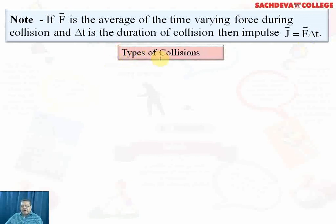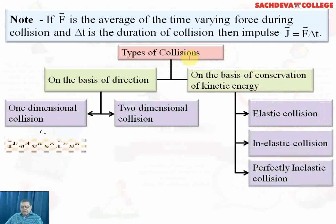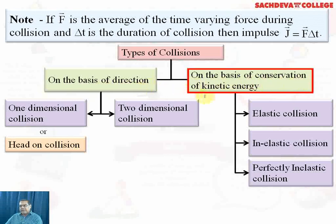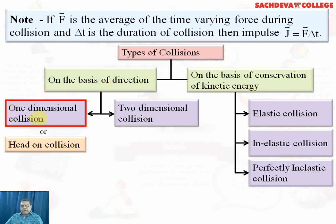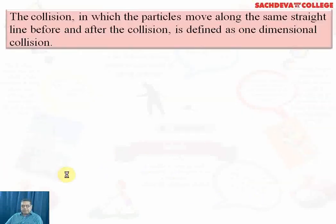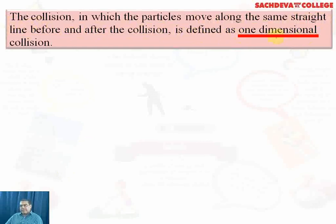There are various types of collision, classified on the basis of direction and on the basis of conservation of kinetic energy. On the basis of direction, we classify collisions as one-dimensional collision or two-dimensional collision. A one-dimensional collision, also called head-on or direct collision, is one in which the particles move along the same straight line before and after the collision.